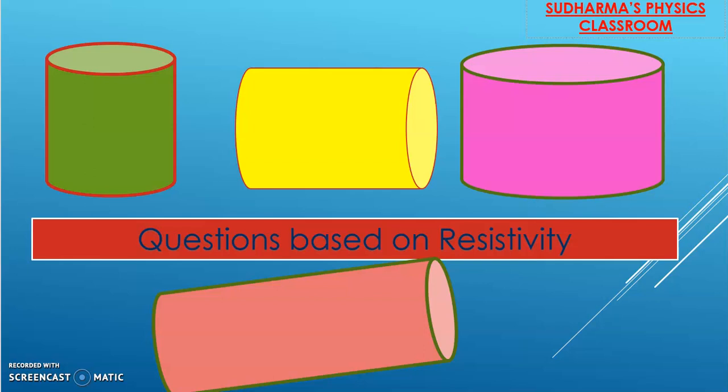Welcome everyone to Sudharma's physics classroom. Today we are going to solve some questions related with specific resistance or resistivity. If you are watching this channel for the first time, watch the previous videos which explained Ohm's law, resistivity or specific resistance, and factors affecting the resistance of a conductor, so that you will get an idea of the questions we are solving today.